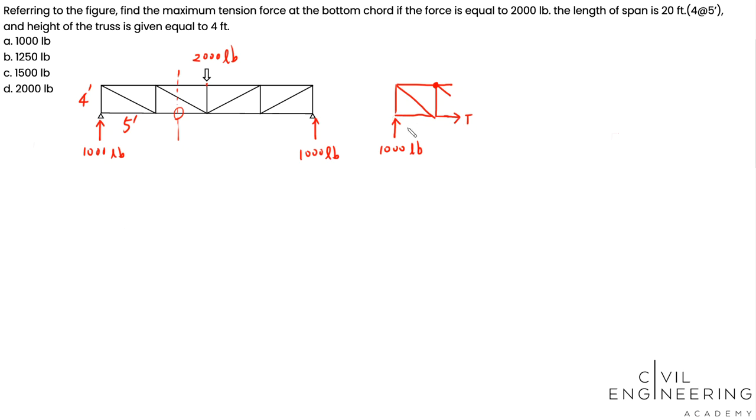So here, 1,000 pounds times the moment arm, this is 5 feet, that should equal your T times the moment arm 4 feet. So your T should be 1,000 times 5 divided by 4.